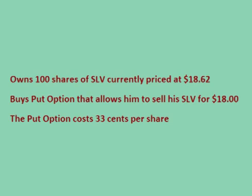He buys a put option for $33 total, locking in the right to sell that stock for $18 a share anytime between the time he purchased the option and the time it expires in a month, should the price drop. So for $33, he has locked in the right to sell his SLV for $18, effectively placing a floor on the amount he can lose.